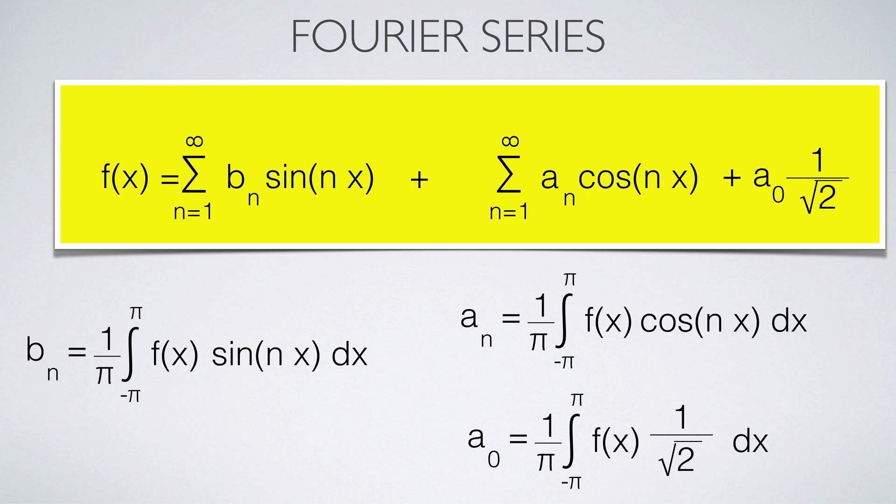The Fourier series writes a function as a sum of these basis functions. As in finite dimensions, the coefficients are given by the inner products of the function f with the basis vectors.